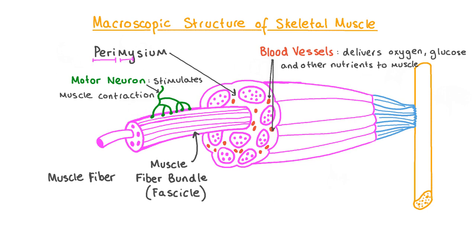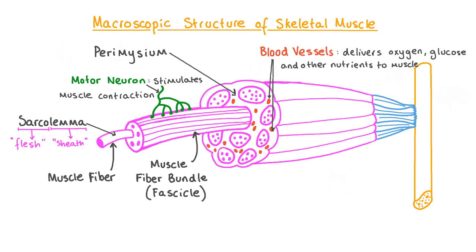Each skeletal muscle fiber is one very long cylindrical muscle cell which is enclosed within a plasma membrane called the sarcolemma. The sarcolemma forms a protective membrane around each fiber. It is sometimes also called the myolemma, which contains the prefix myo, referring to muscles.